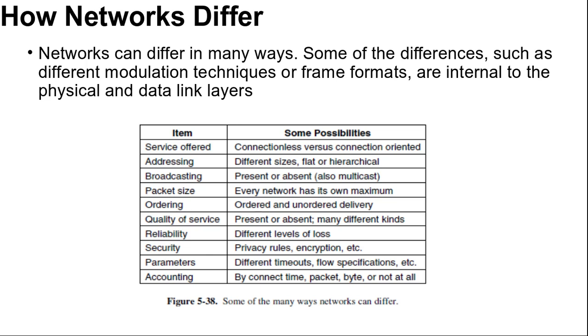How networks differ? Networks can differ in many ways. Some of the differences such as different modulation techniques or frame formats are internal to the physical and data link layers. These differences are not so important. But here you can see in the figure some of the many ways networks can differ: service offered, addressing, broadcasting, packet size, ordering, and many others. Here some of the differences that can be exposed to the network layer. Papering over these differences makes internetworking more difficult than operating within a single network.